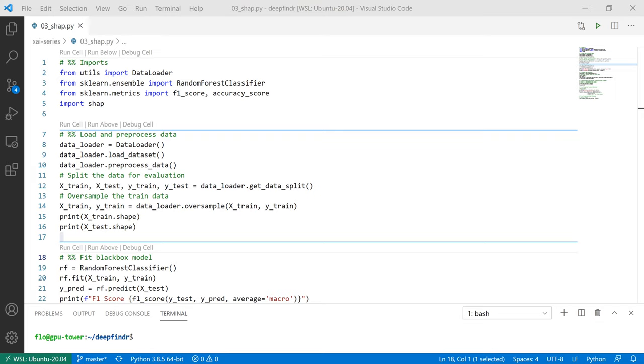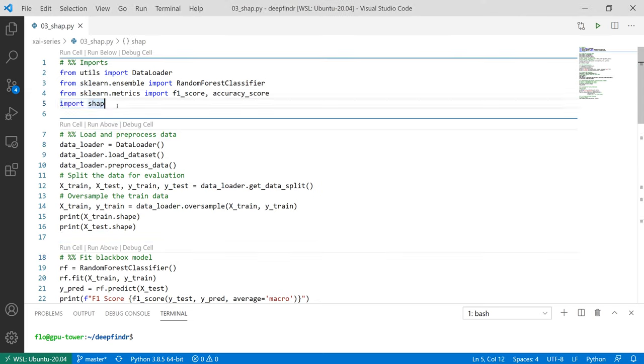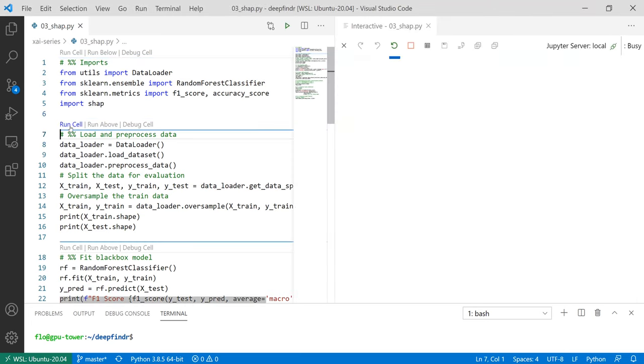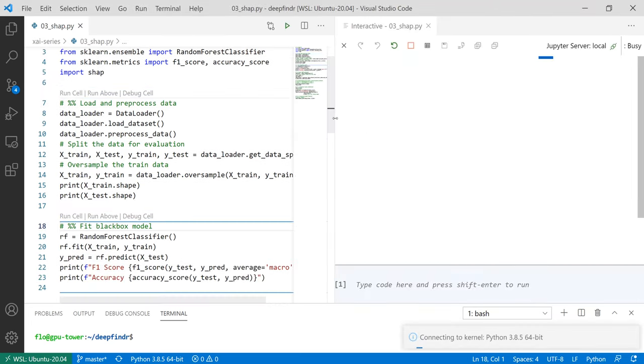So as you can see I changed the color settings in VS Code because some of the plots from Shap were not quite visible in the dark theme. So now I hope it's better with this bright layout. In the first step we again import the data loader from our utils file just like in the other videos and additionally I use the Shap python library because I think that this library provides better visualization techniques than the other library.